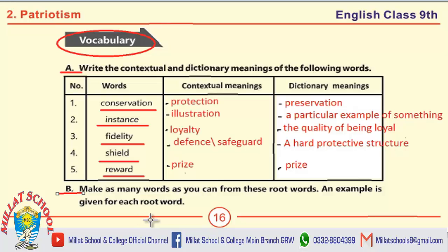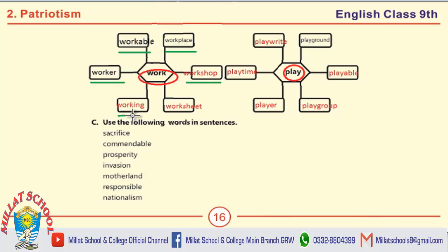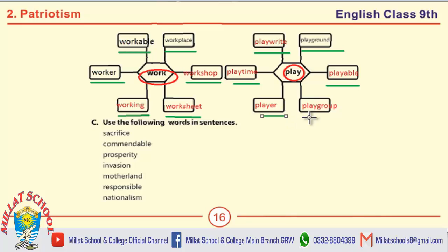Next, Part B: Make as many words as you can from these root words. An example is given for each root word. The root words are work and play. From work: workable, workplace, worker, workshop, working, worksheet. From play: playwright, playground, playable, playtime, player, and playgroup.